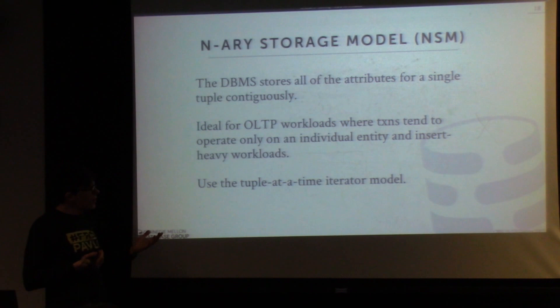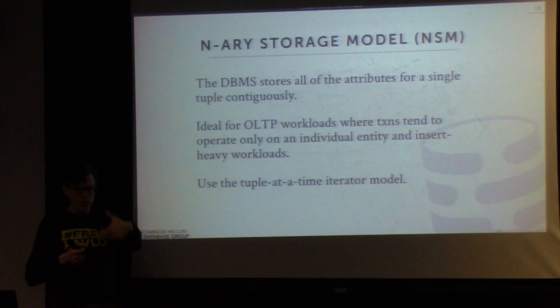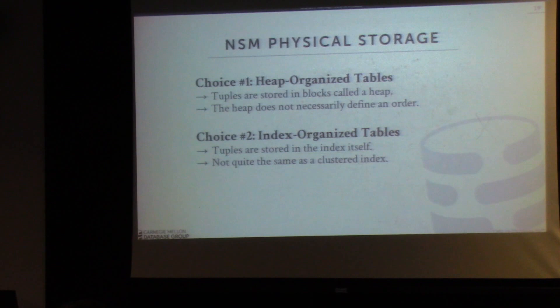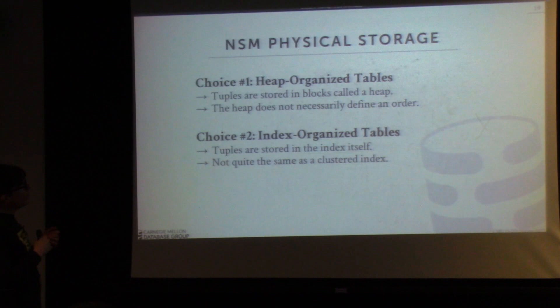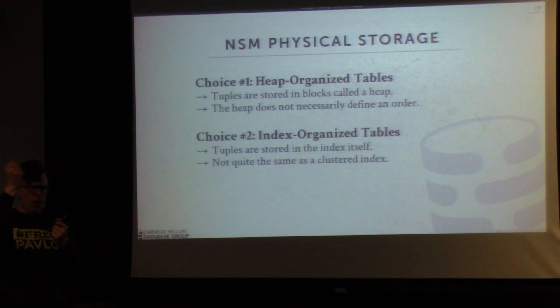NSM also uses the tuple-at-a-time model — the volcano approach we talked about at the beginning of the semester — which makes sense in an OLTP environment when you want to grab single tuples. There are two ways to store NSM data: heap-organized tables, where tuples are collected into blocks called a heap and item pointers are memory addresses pointing to block location and offset; or index-organized tables, where the actual tuple data is stored in the leaf nodes of the index — which is what MySQL's InnoDB does with a B+ tree.